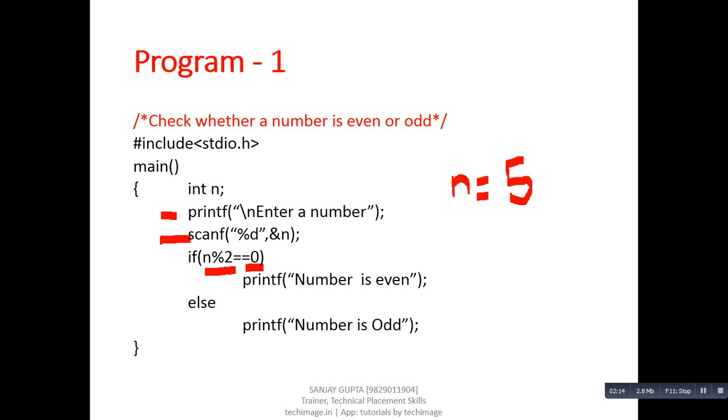So the output will be 'number is odd'. Suppose we entered number 6 inside n. In this case, 6 modulus 2, the remainder will be 0. So 0 double equals to 0, the condition becomes true. Now the output will be 'even'. If we want to check both parts of a condition, true as well as false, we can use if-else statement.